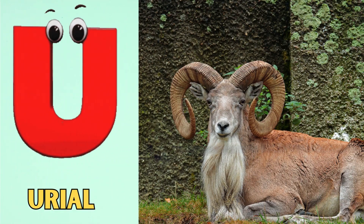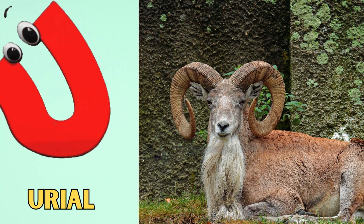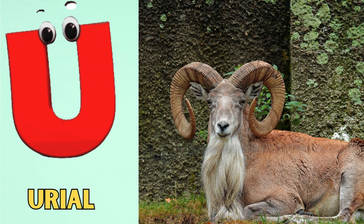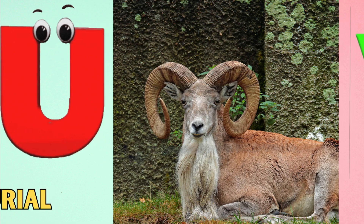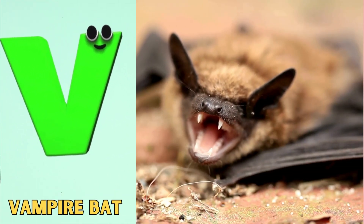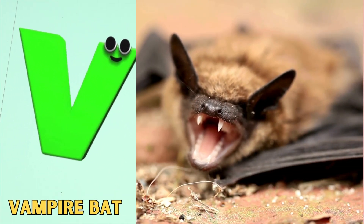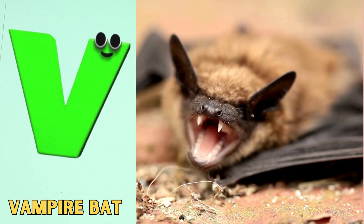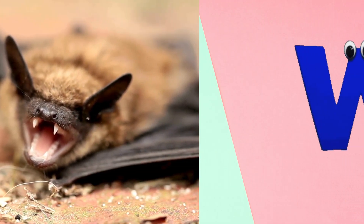U is for urial. Ah, ah, urial. V is for vampire bat. V, v, vampire bat.